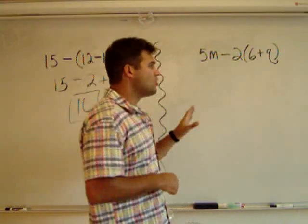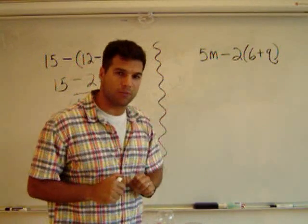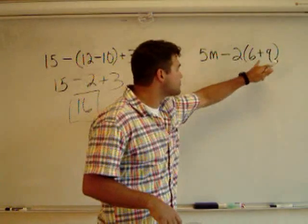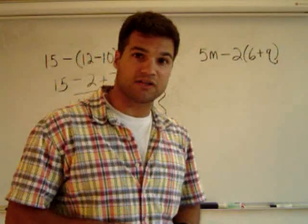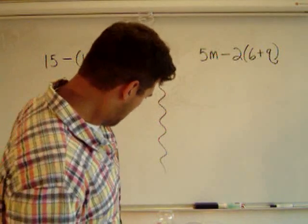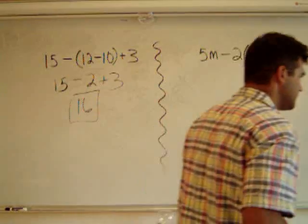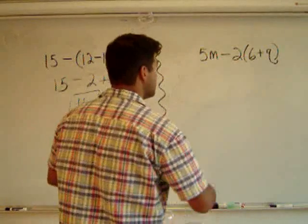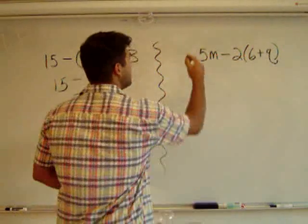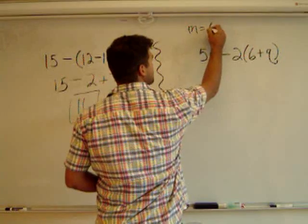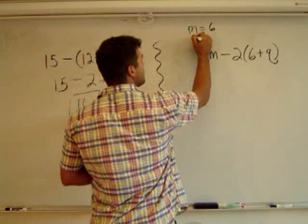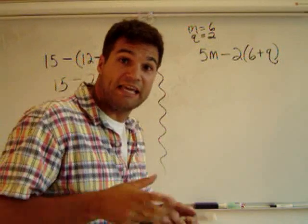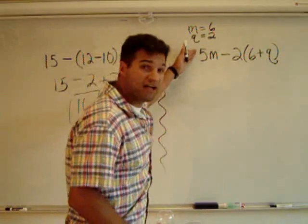Now, what we're going to do over here is we're going to evaluate. We're going to give value to. So first I have to figure out what the values of these variables are. Someone just told me, and usually these are given, that the value of m is 6 and the value of q is 2. Now that I know the values of those variables, I can evaluate this algebraic expression.